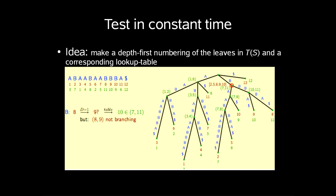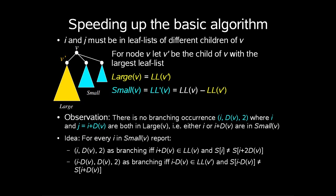So we need to speed up this basic algorithm. If we recall our lemma, we know that i and j must be in leaf lists of different children of v. So for node v we let v' be the child of v with the largest leaf list. So Large(v) is the leaf list of v'. And Small(v) is LL'(v), which is LL(v) minus LL(v').